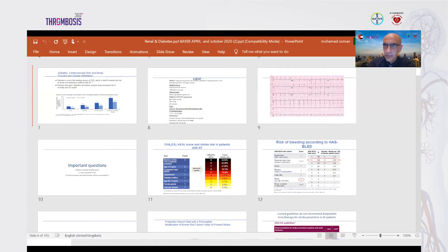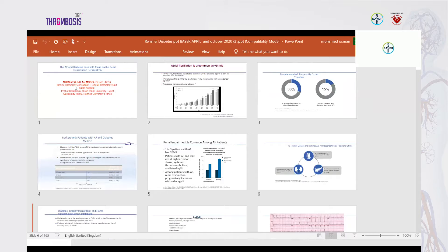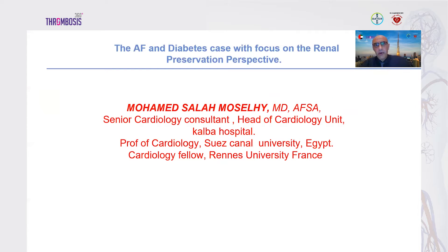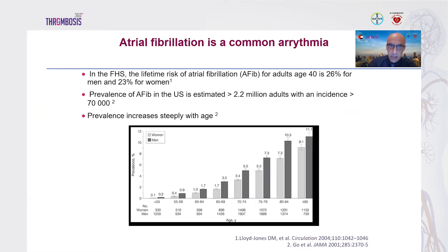Thank you, Mr. Chairman, for the introduction. Good evening everybody. I'd like to thank Bayer for inviting me to this scientific event, and the Emirates Society of Cardiology. Today I will speak about atrial fibrillation and diabetes mellitus, with emphasis on the renal preservation perspective. Atrial fibrillation is one of the commonest arrhythmias, with a prevalence of more than 2.2 million adults in the U.S. and incidence of more than 70,000.